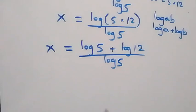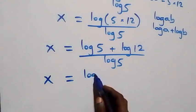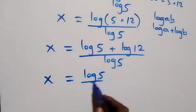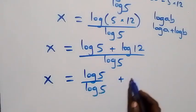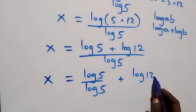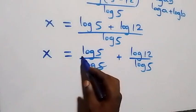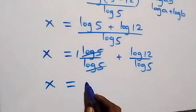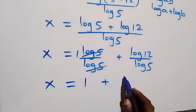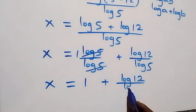We separate this into two fractions: x equals log5/log5 plus log12/log5. Since log5/log5 equals 1, this simplifies to x equals 1 plus log12/log5.